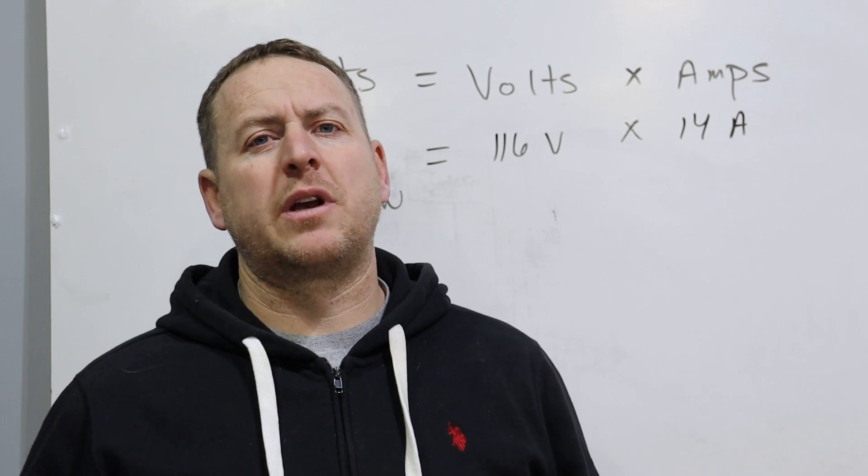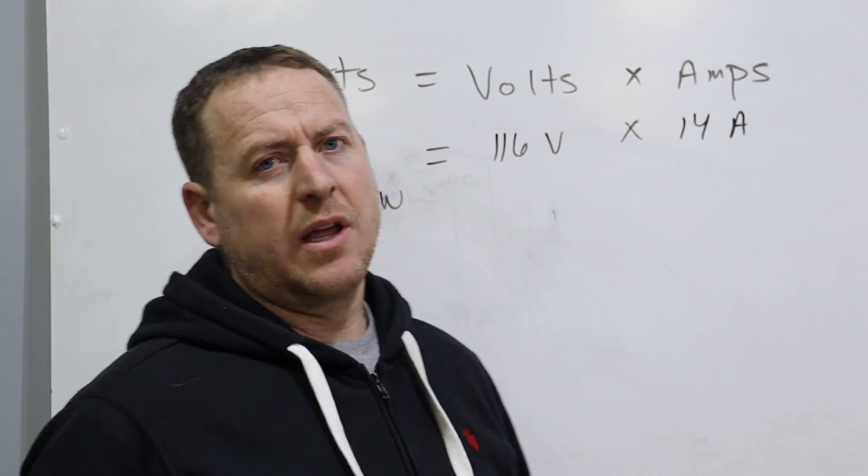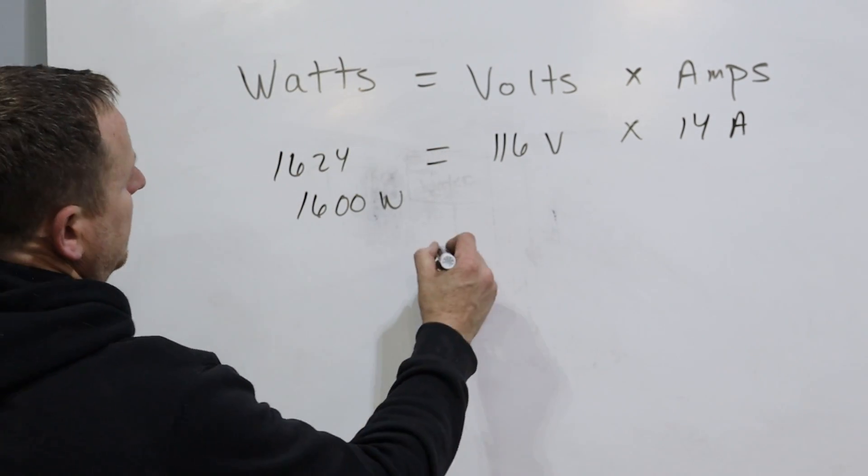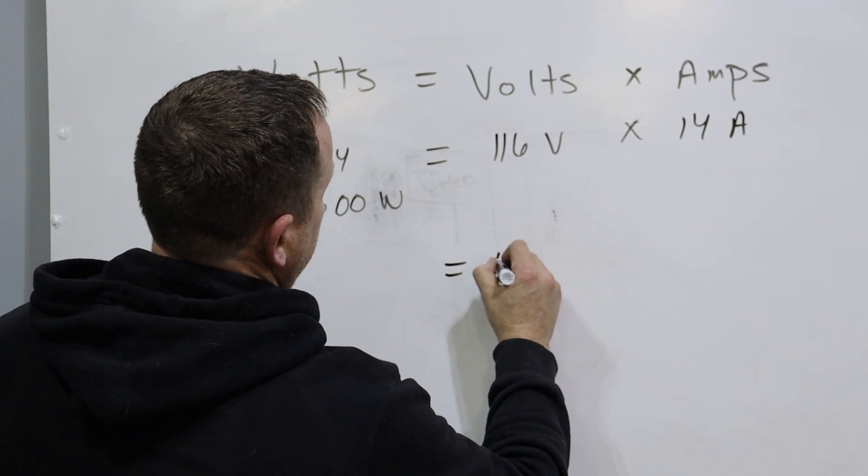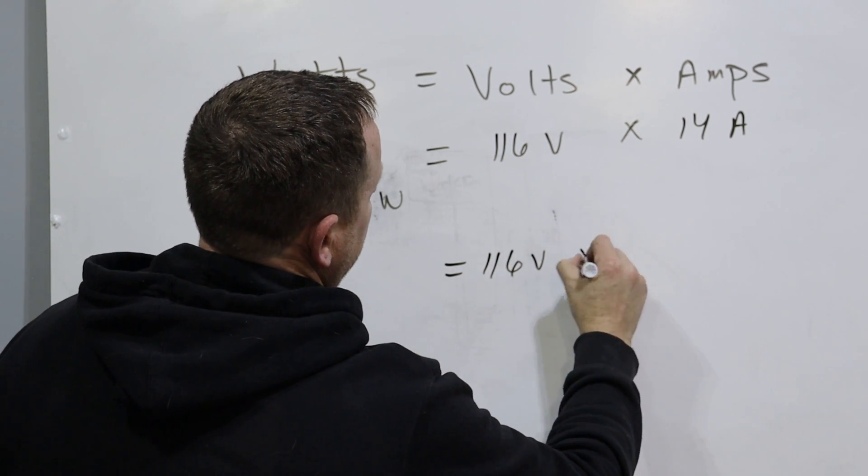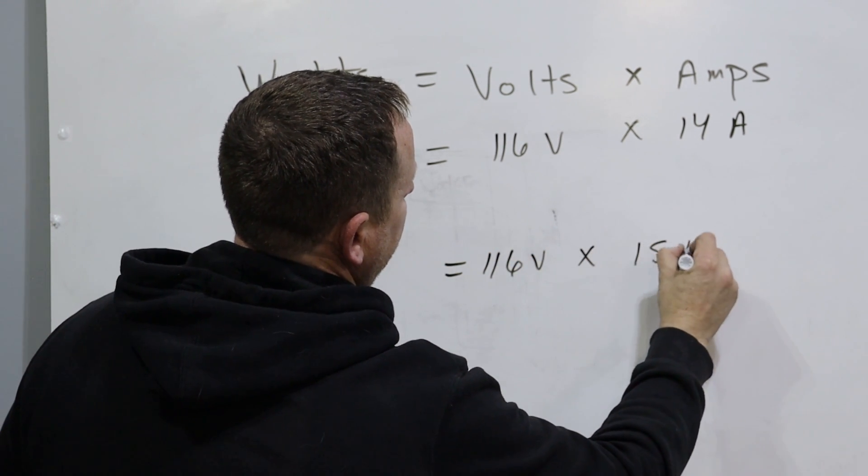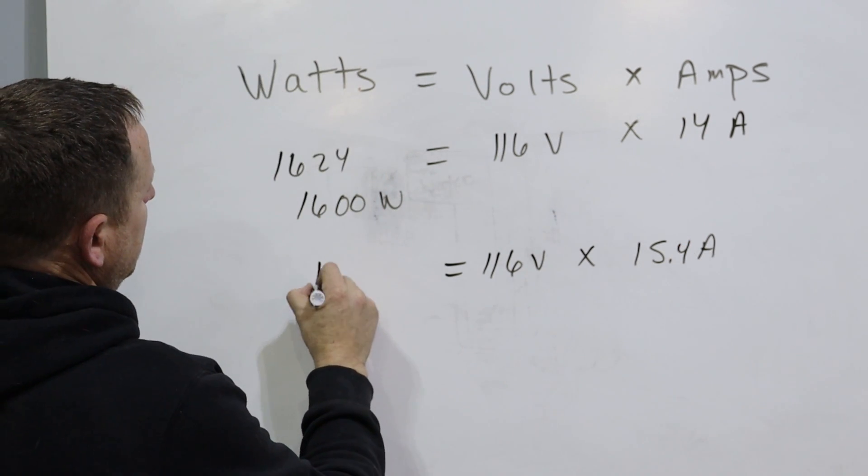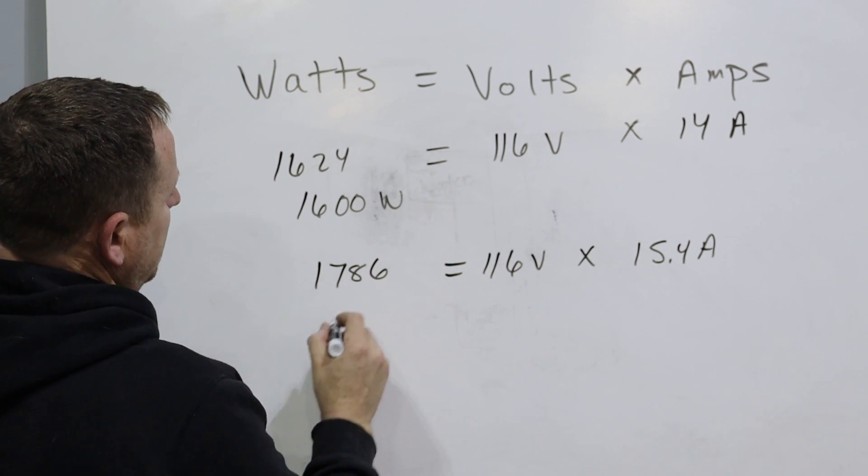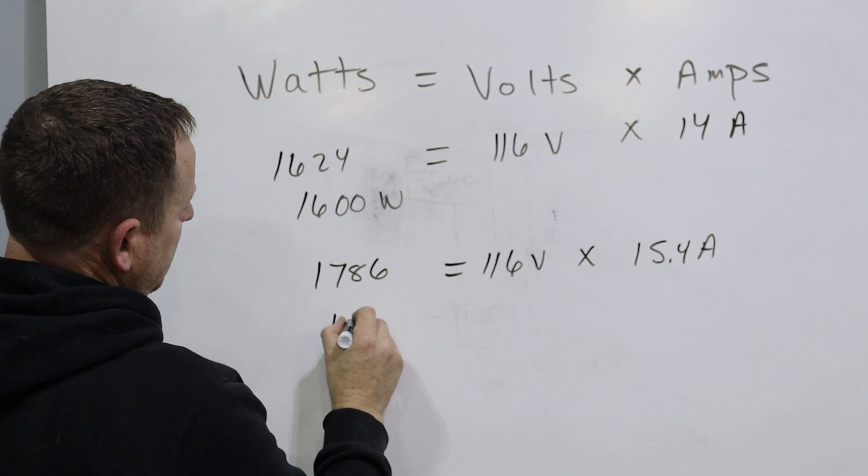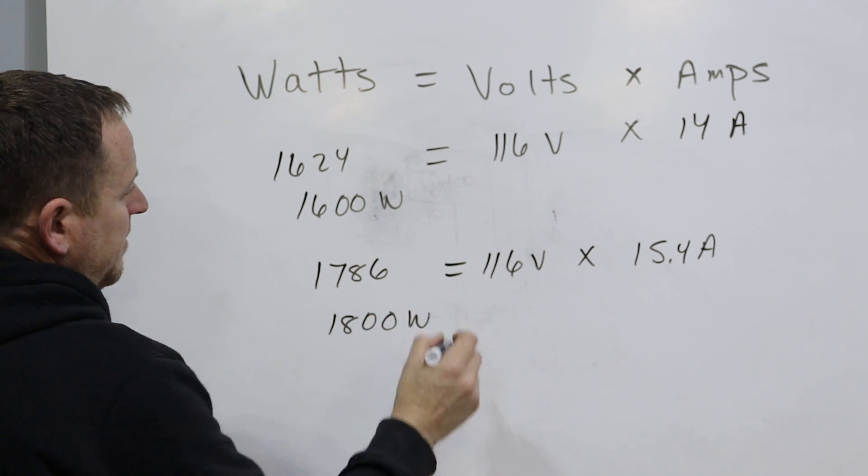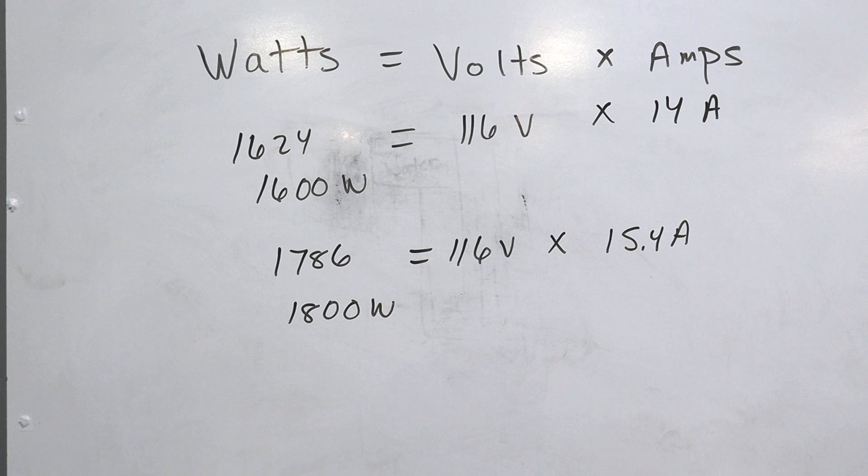I did try this experiment one other time, and I actually got around 15.4 amps. So based on my previous experiment and the experiment I just showed here for this video, it's anywhere between 1,600 and 1,800 watts is what the jackhammer is actually producing.